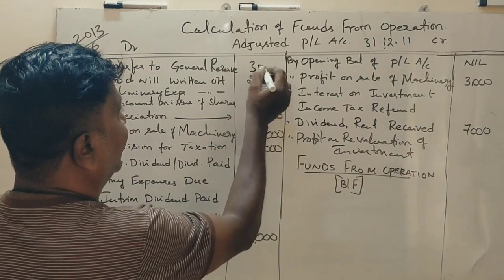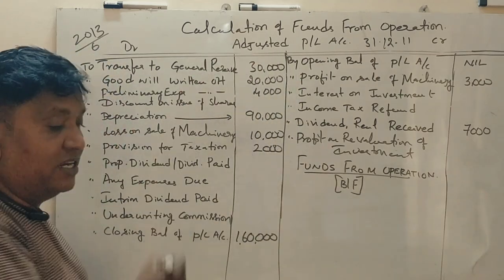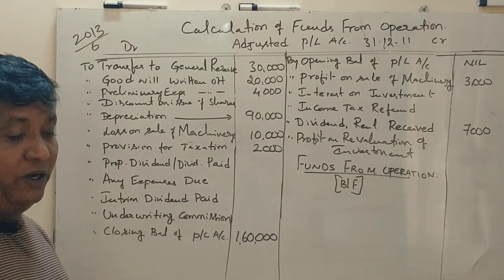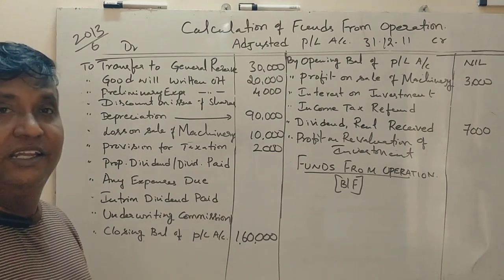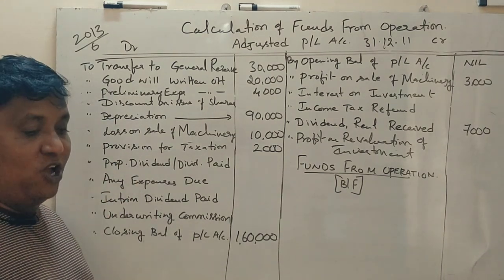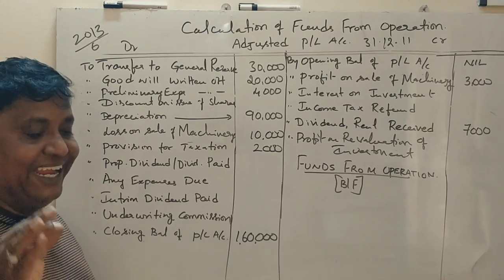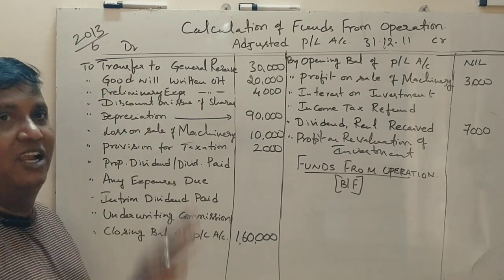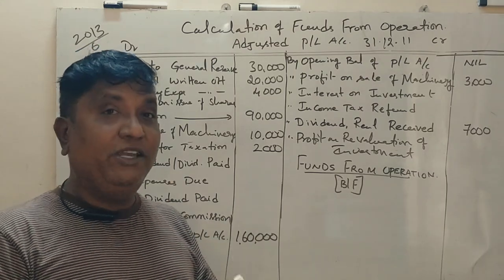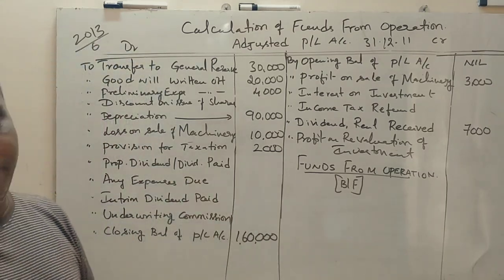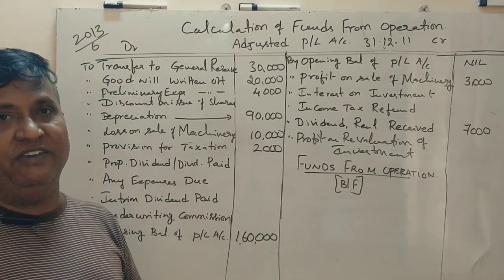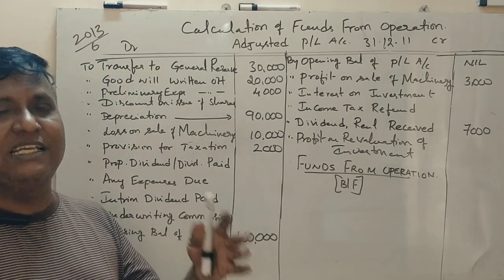Transfer to general reserve: 30,000 rupees. The next point is very important — commission paid on non-trading activity, debited to profit and loss account.